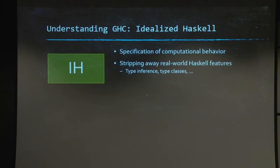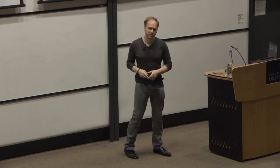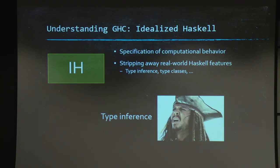How do we do that? We get rid of all the real world features of Haskell, like type inference. And in particular, type inference, type classes. In particular type inference, why? Because type inference is a complicated beast. We just don't want to deal with it in this one. So, we'll just assume that we have an oracle for type inference here.